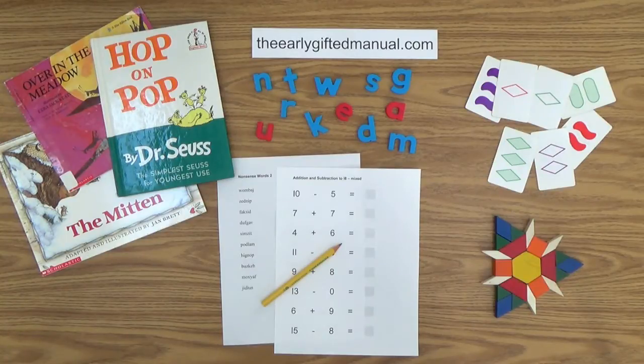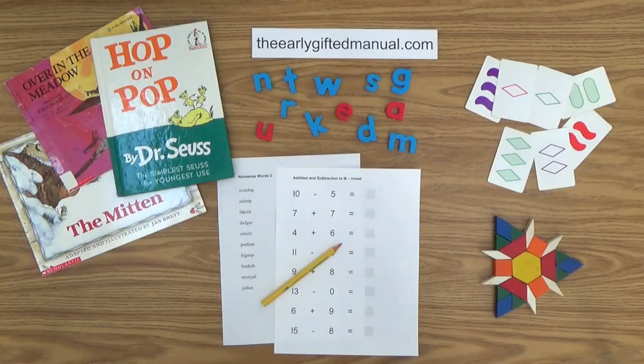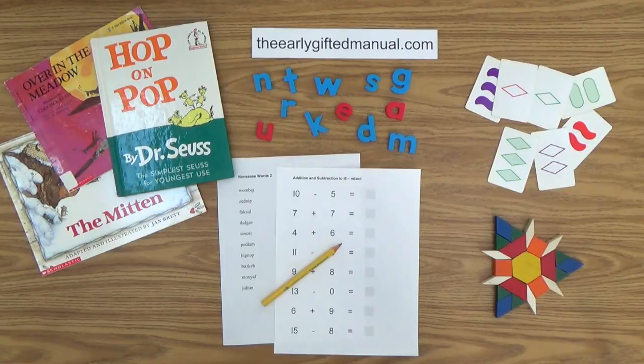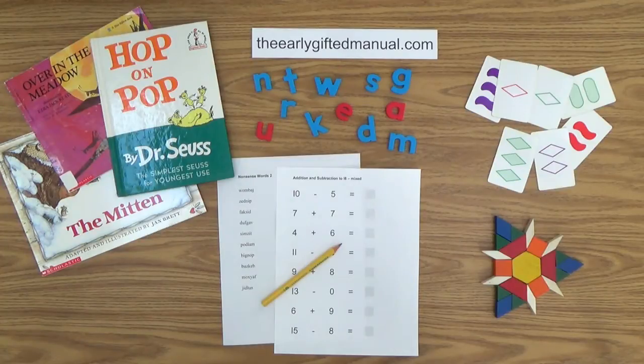As the video lessons are designed to work in conjunction with the program on my website, I ask you to, at some point, click on the URL link in the description box below and this action will take you to theearlygiftedmanual.com. By doing that, you will be able to put this lesson and all of the video lessons here on my channel in the proper context of the total program that I am presenting to you and your child.